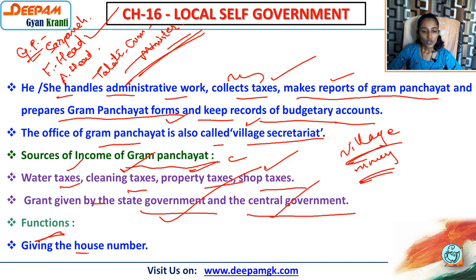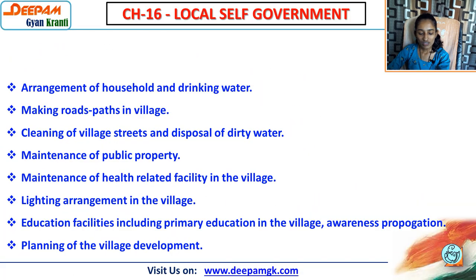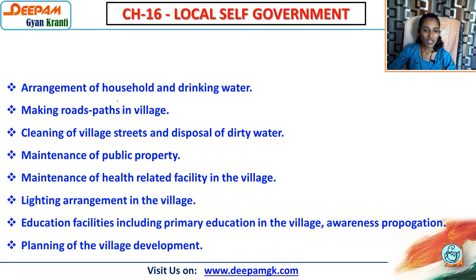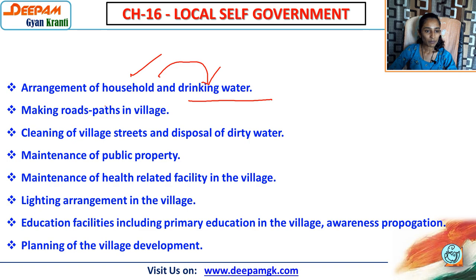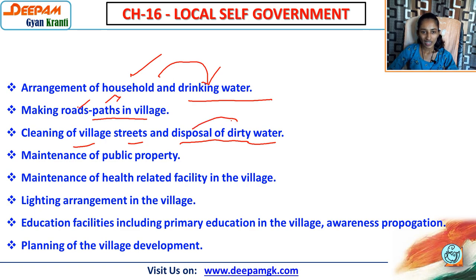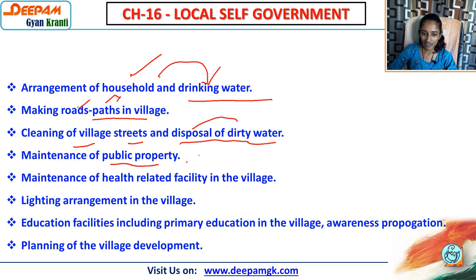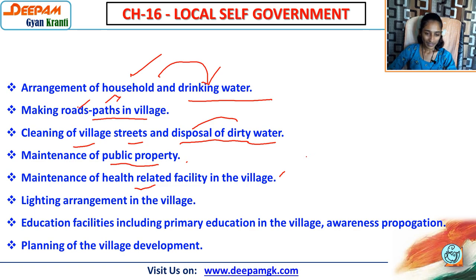Functions of the gram panchayat: giving house numbers to all houses in the village; arrangement of household and drinking water supply; making roads and paths in the village; cleaning of village streets and disposal of dirty water through drainage systems; maintenance of public property like gardens and primary schools; and maintenance of health-related facilities such as a small dispensary in the village.